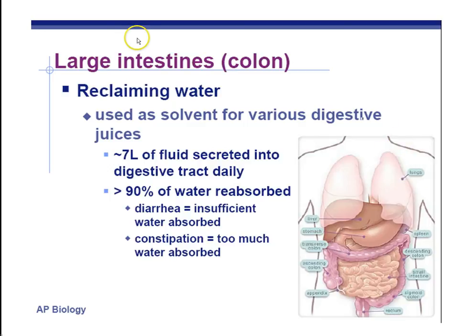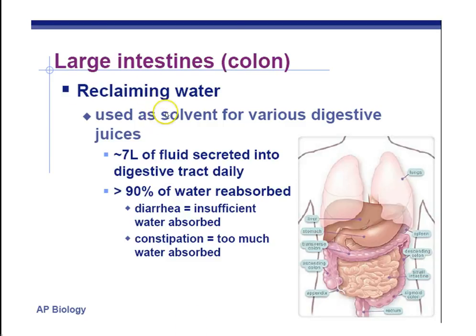The last part of the digestive system is the large intestine. It's not large as far as length — your small intestine is much longer. It's large in diameter. So we're talking large as a cross-section, not total length — it's actually much shorter than the small intestine. The large intestine is going to mainly just reclaim water, and that's the main job of the large intestine, also known as the colon.